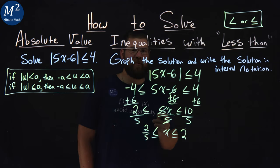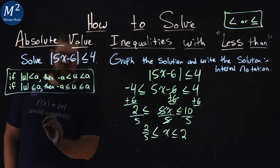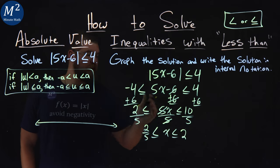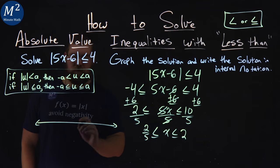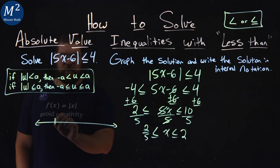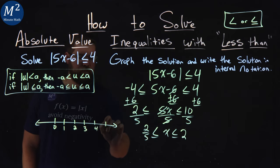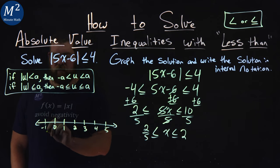So we solved this here. Now we need to graph our solution. We have 2 fifths and 2 here. So we'll start with 0 right here. And 2 fifths is between 0 and 1, so we'll put a 1 here. And then 2, 3, 4, 5, and negative 1.